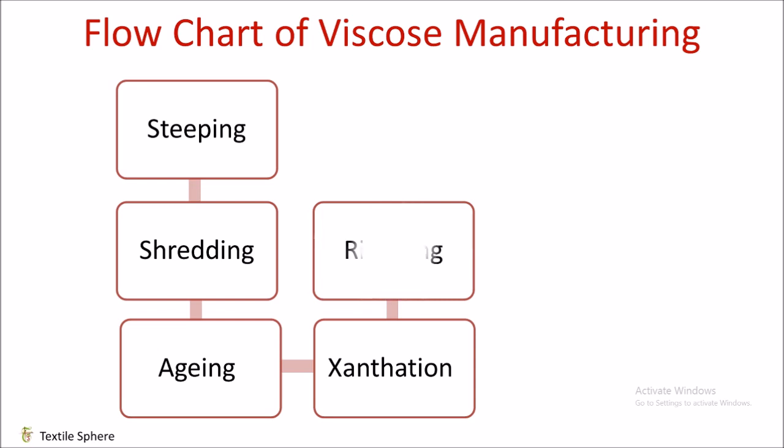Next is Ripening. In this process, the viscose is allowed to ripen for a stipulated period of time. During ripening, two major processes take place: the xanthate groups are redistributed and then lost, and the viscosity of the solution first decreases and then rises to its original value.